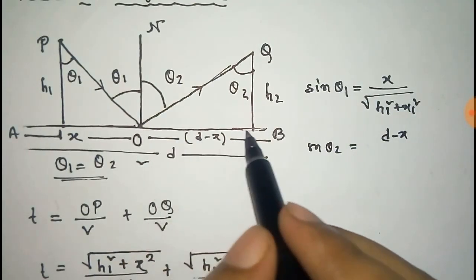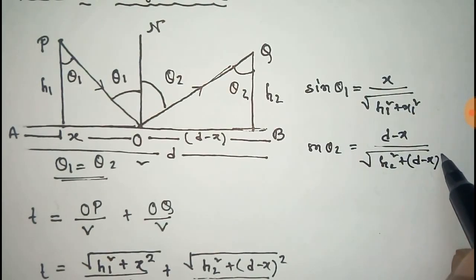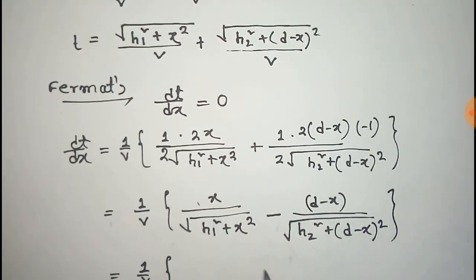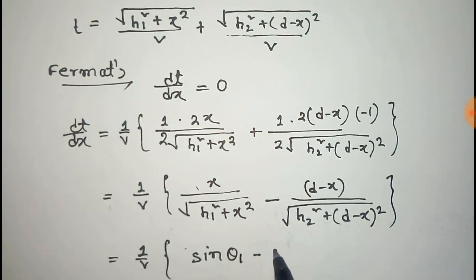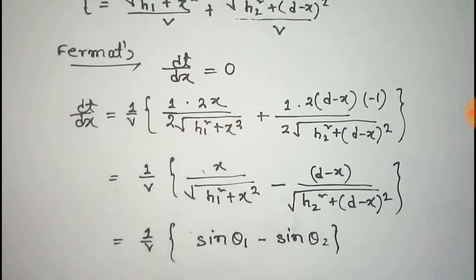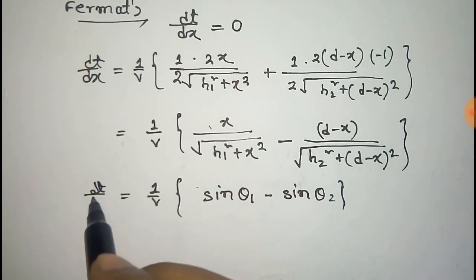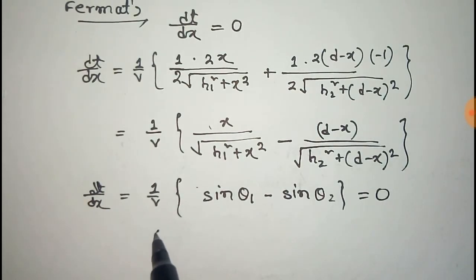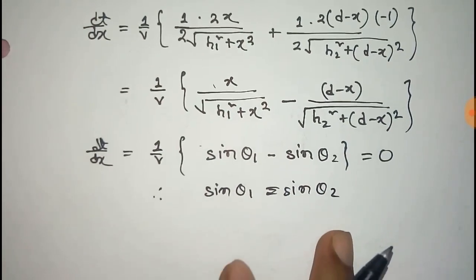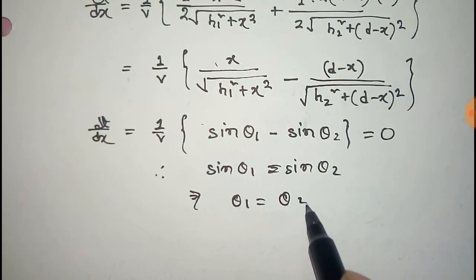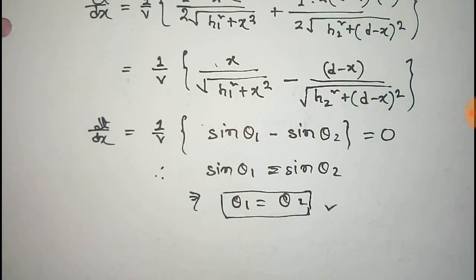Putting these values into our main equation, we get sin theta 1 minus sin theta 2. From Fermat's principle, dT/dX equals 0, so this expression equals 0. From this we get sin theta 1 equal to sin theta 2, which means theta 1 equals theta 2. This is the law of reflection — the angle of incidence is equal to the angle of reflection.